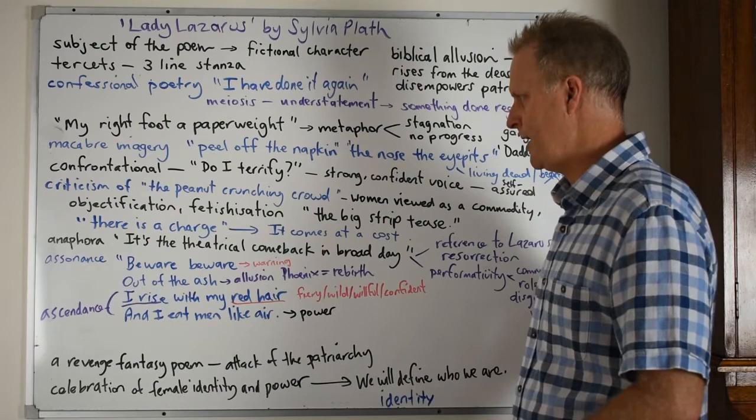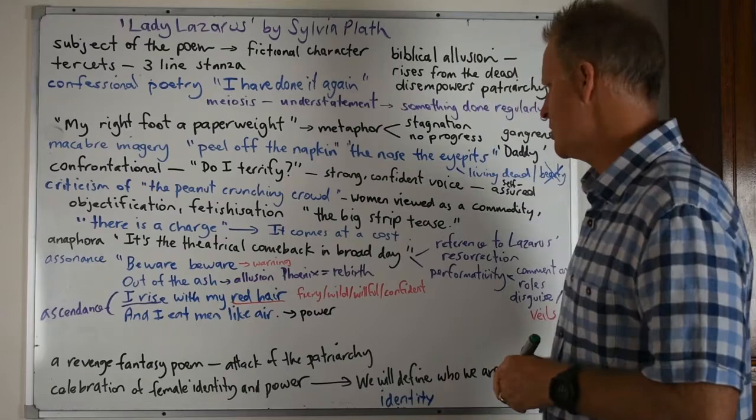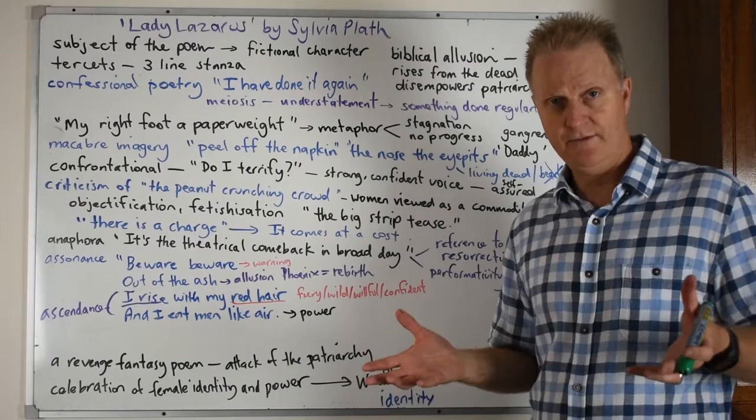There's a lot of anaphora in the poem near the end. There's six or so lines. And she states, it's the theatrical comeback in broad day. And this is a reference to obviously Lazarus' resurrection.